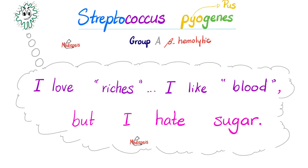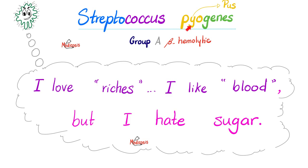Streptococcus pyogenes: they call me pyogenes because I cause genesis of pus — impetigo, cellulitis, necrotizing fasciitis, septicemia, pyemia, etc. All of the above.